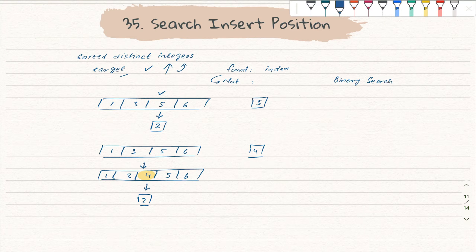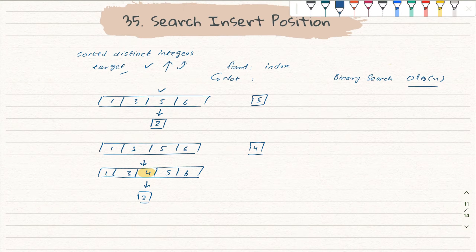So take an example. We will always try to take a simple example like one, three, five, seven, and the target value is four. If we look at it, this target value should fall here at that point with index two.